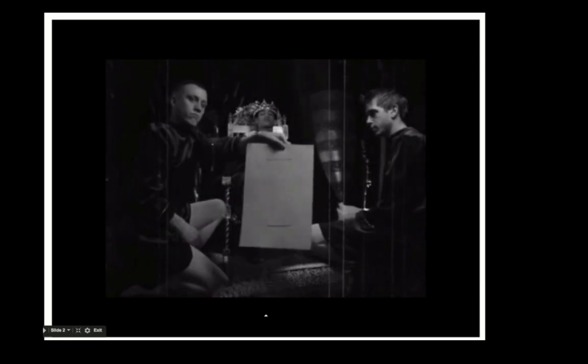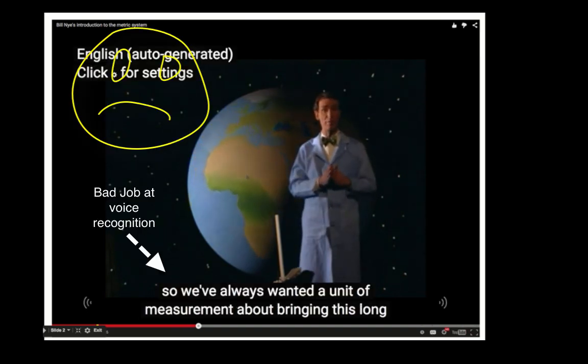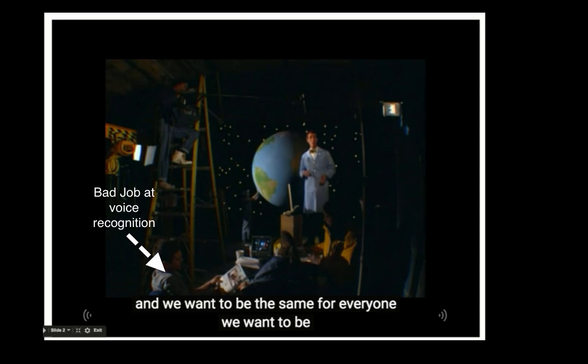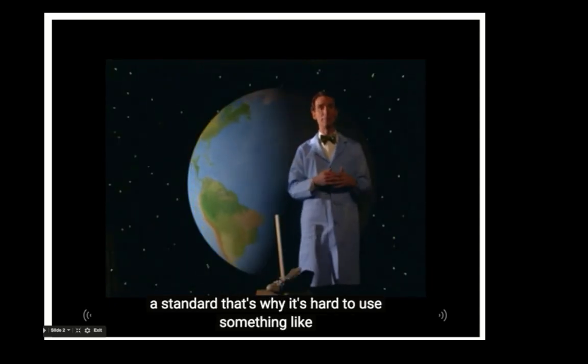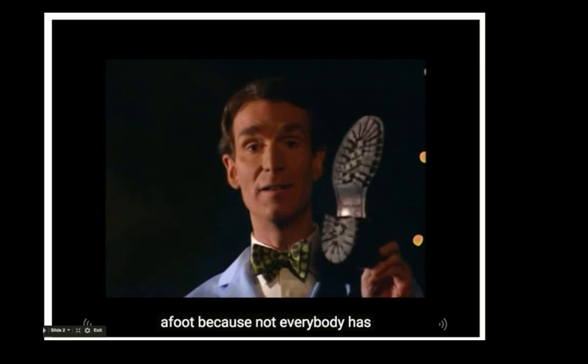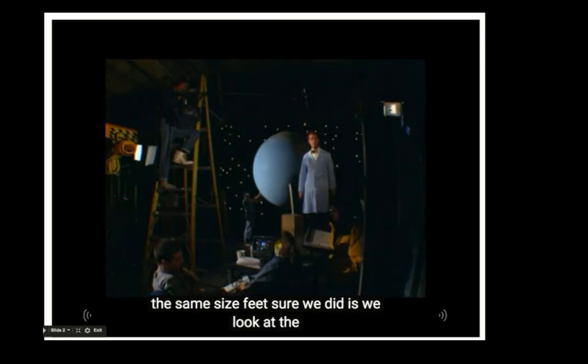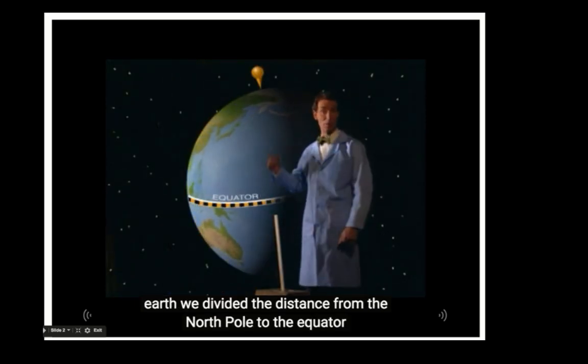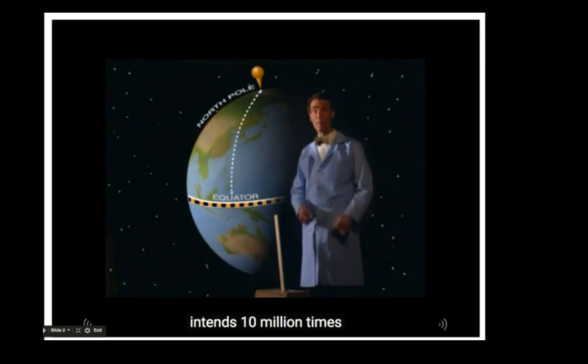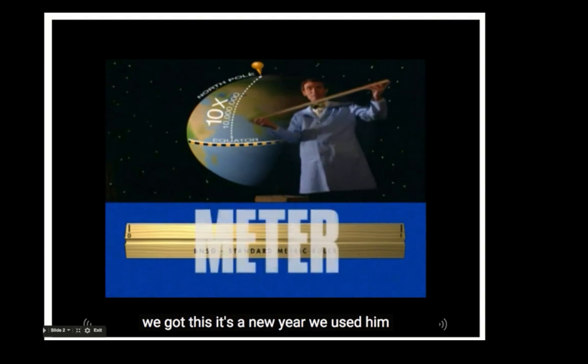Humans are about this big, so we've always wanted a unit of measurement about this long and we want it to be the same for everyone. We want it to be a standard. That's why it's hard to use something like a foot, because not everybody has the same size feet. So what we did is we looked at the Earth and divided the distance from the North Pole to the equator in tens, ten million times, and we got this. It's a meter.